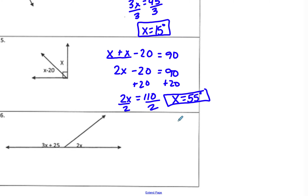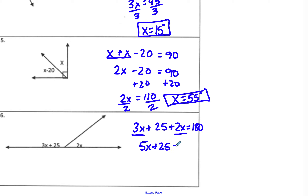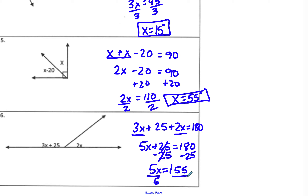Go ahead and pause the video and try number six on your own. This time the angles are on a straight line, so they equal 180. So 3X plus 25 plus 2X equals 180. Combining like terms: 3X plus 2X is 5X, giving 5X plus 25 equals 180. Subtracting 25 gives 5X equals 155, then dividing both sides by 5 gives X equals 31 degrees.